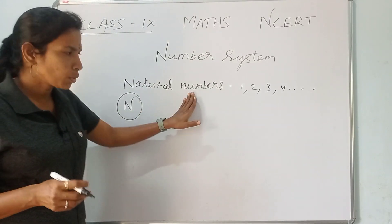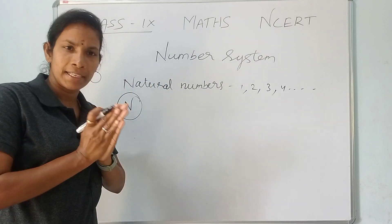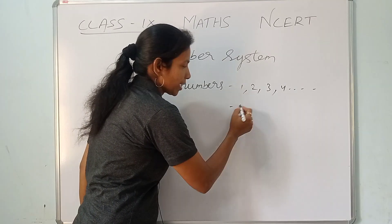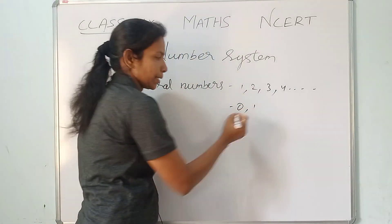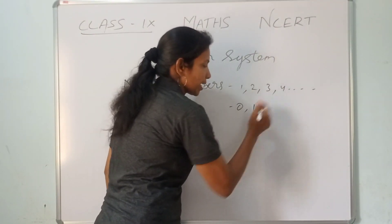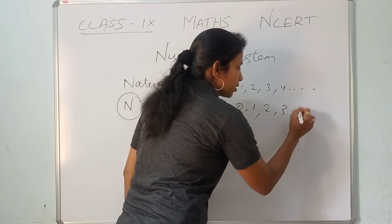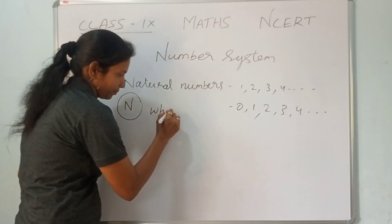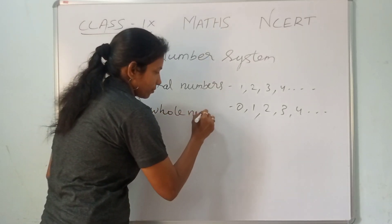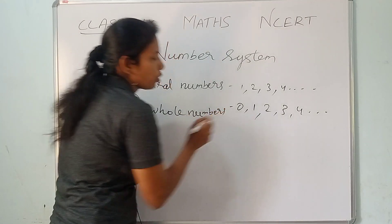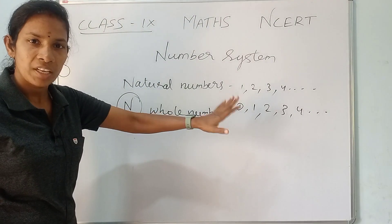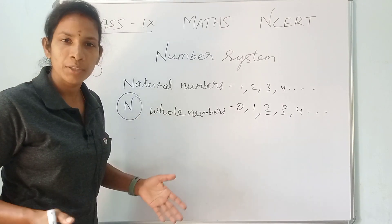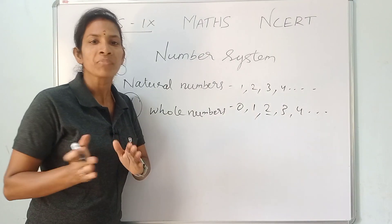Now, what about the number 0? If we add 0 to the natural numbers, we call it Whole Numbers. Whole numbers start from 0. So 2 is both a whole number and a natural number. Every natural number is also a whole number.